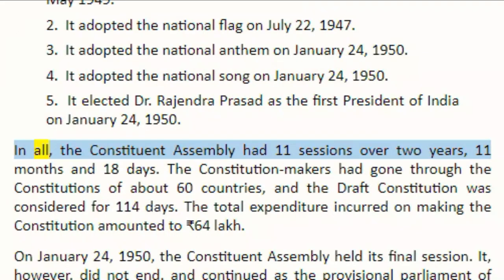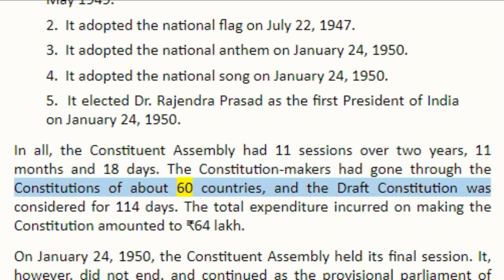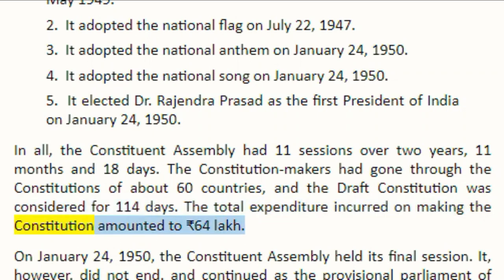In all, the Constituent Assembly had 11 sessions over 2 years, 11 months, and 18 days. The Constitution makers had gone through the constitutions of about 60 countries, and the draft constitution was considered for 114 days. The total expenditure incurred on making the constitution amounted to 64 lakh rupees.